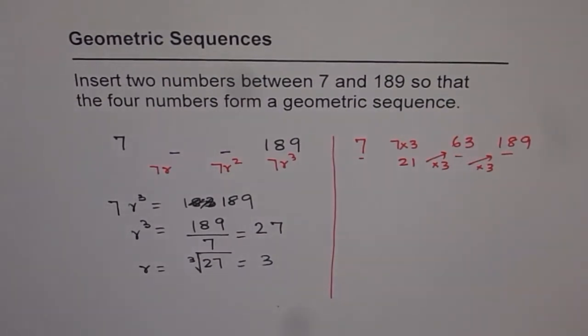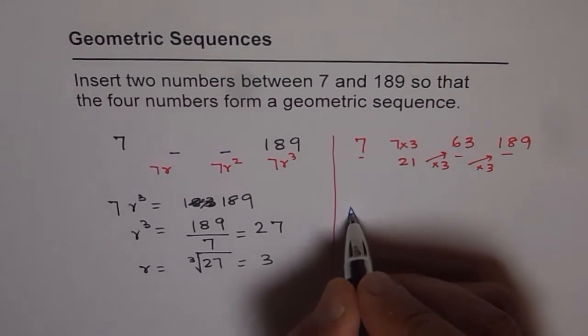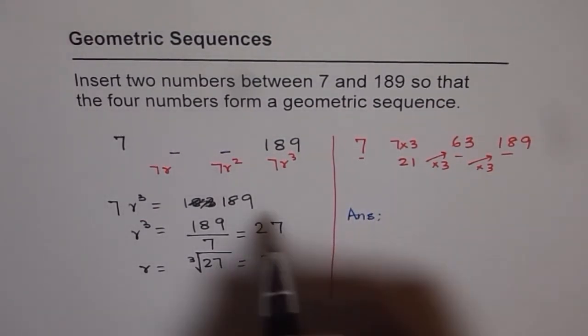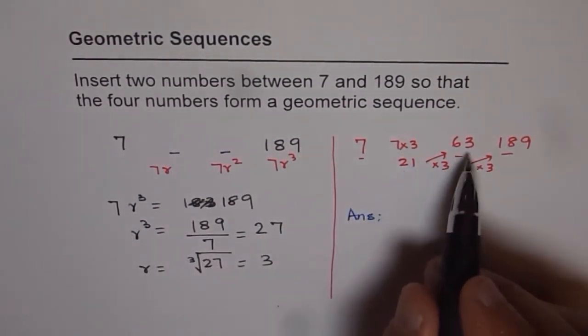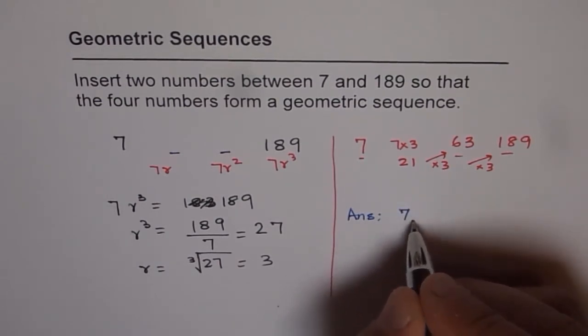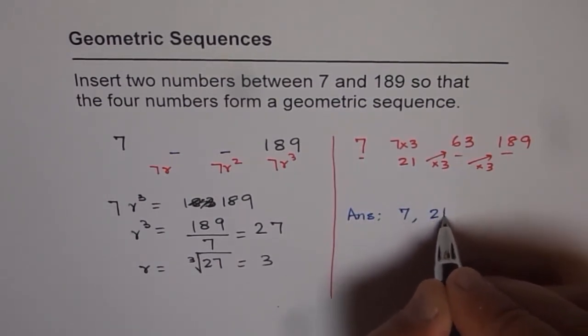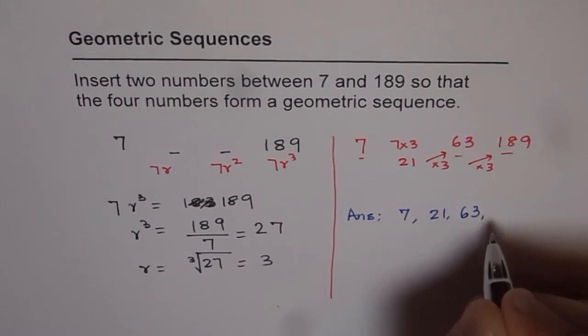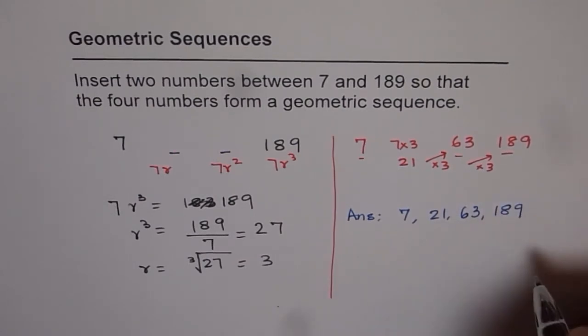And the answer is that the numbers in between are indeed 21 and 63. And therefore, the four numbers are 7, 21, 63, and 189.